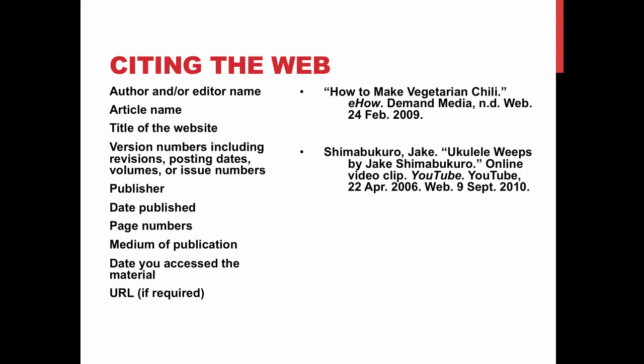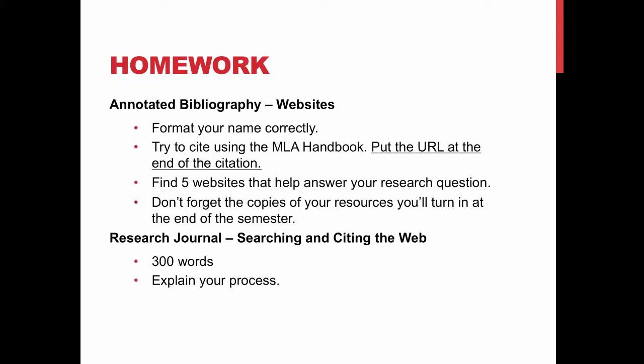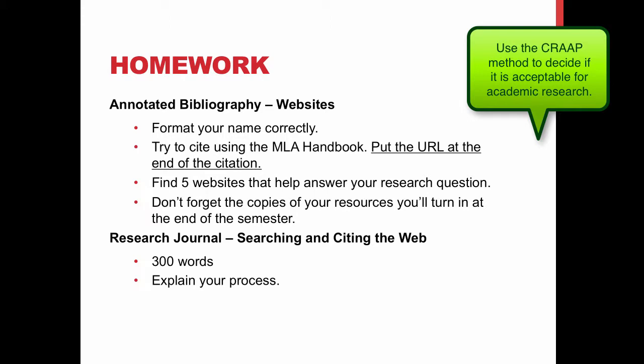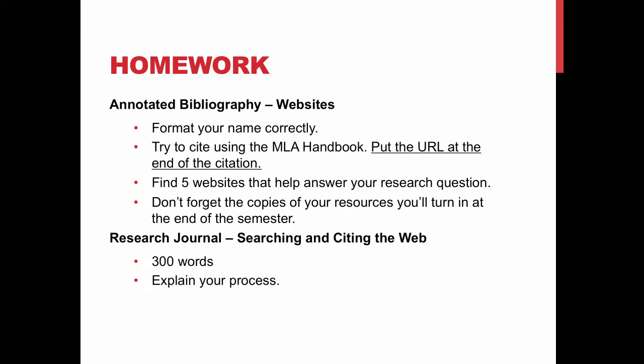For homework, you need to find five websites that help answer your research question. You can use anything on the free web as long as you don't pay for it, it's acceptable in academic research, and it's not from Wikipedia. Wikipedia has issues — anyone can edit it without necessarily having the right qualifications, making it not a good resource for academic research. It's a good starting place to learn about your topic, but not something you should cite. Make sure you put the URL at the end of your citation, and complete your research journal — 300 words explaining your process.